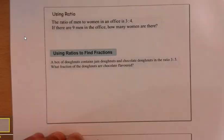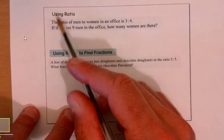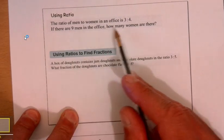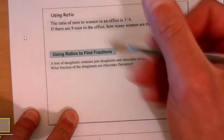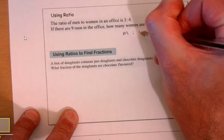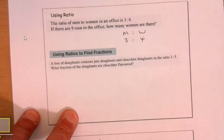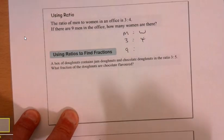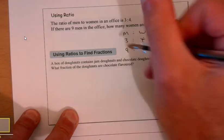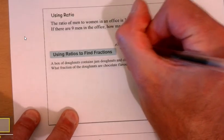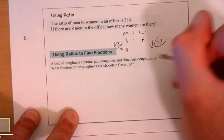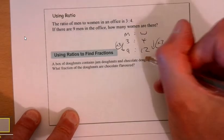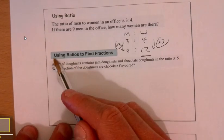Using ratio: the ratio of men to women in an office is three to four. If there are nine men in the office, how many women are there? Let's summarize what we got. Men to women is three to four. If there are nine men in the office, what have I done to get from three to nine? I've multiplied it by three. So do the same to that: 12. How many women are there? There's 12.